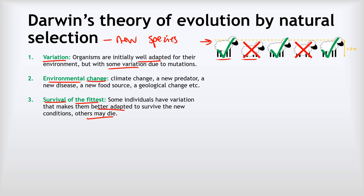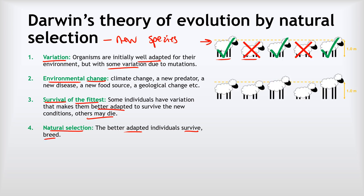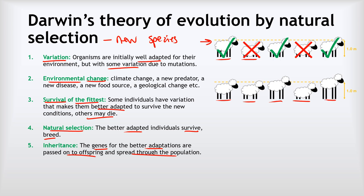This leads to natural selection. Better adapted individuals can survive and, really importantly, they can breed. That means they can pass on the genes for their better adaptations to their offspring, and they spread throughout the population. That doesn't mean there are no more short sheep left, but it does mean that on average the sheep are now taller because the taller ones survived and passed on their taller genes. We call that process inheritance—the way that good genes get passed on to the next generation by natural selection.